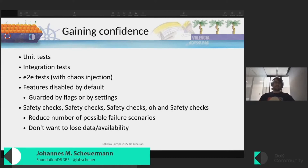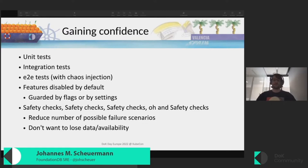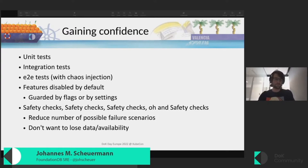How do we gain confidence? First, we write unit tests and integration tests, then end-to-end tests, and we run multiple chaos experiments to understand how the operator behaves under different failure domains. Beyond that, we have multiple safety checks in the operator to ensure we never get into a state where we could lose data or availability — obviously something you don't want to lose in a data service.